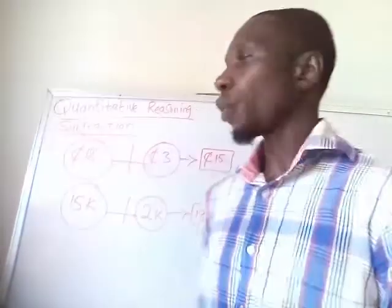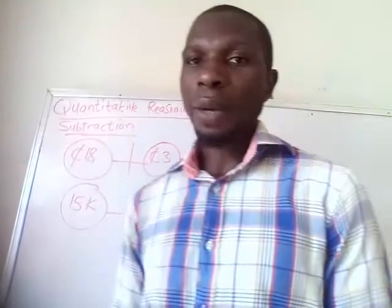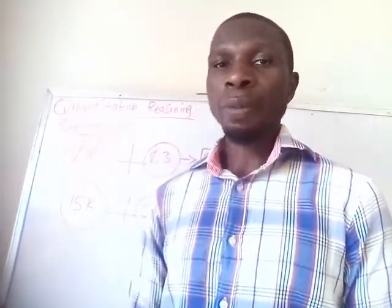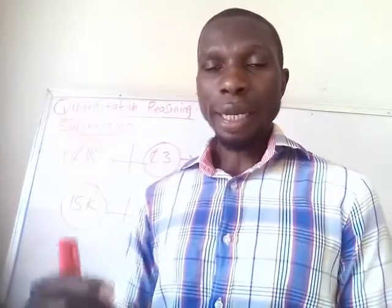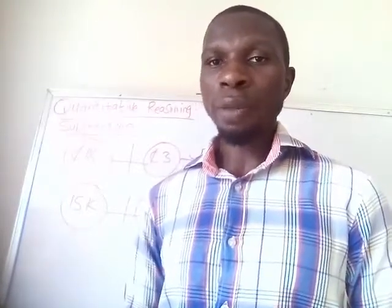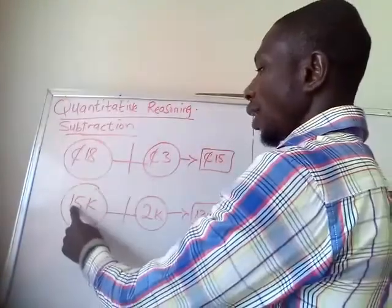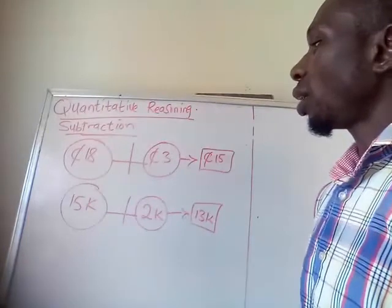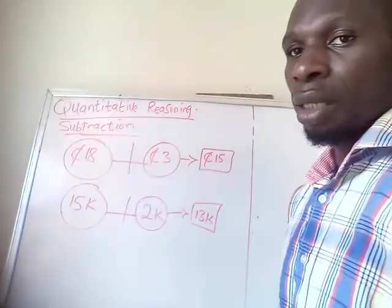To set the ball rolling, we are going to be looking at subtraction. Last week we looked at subtraction of some currency — we looked at the subtraction of euro and kobo — and today we want to look at subtraction of cent and kobo.